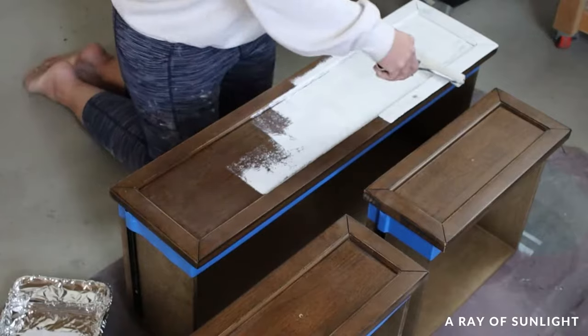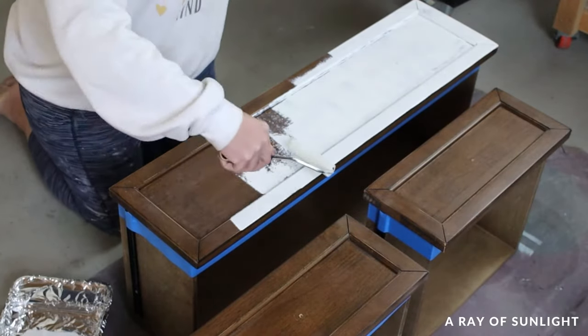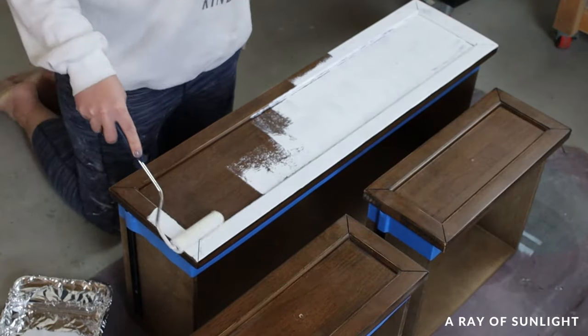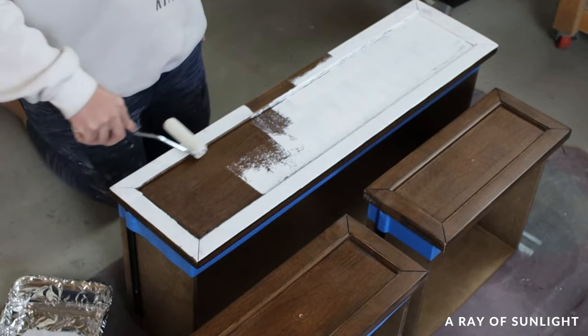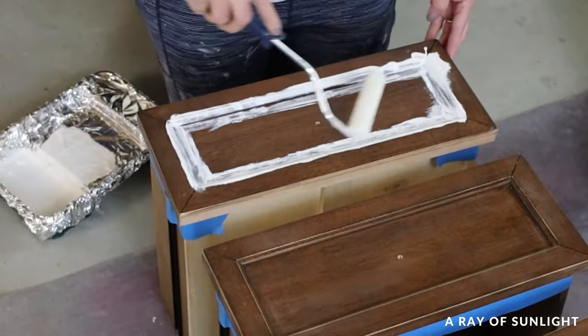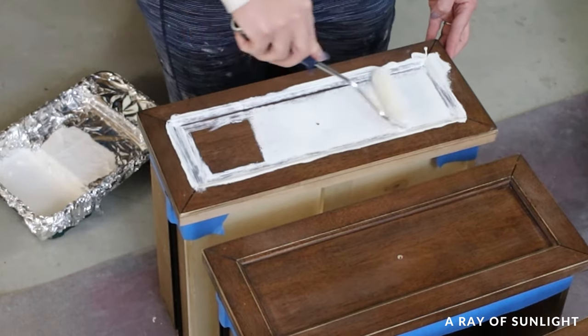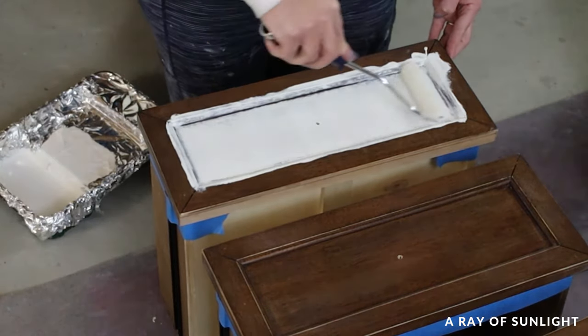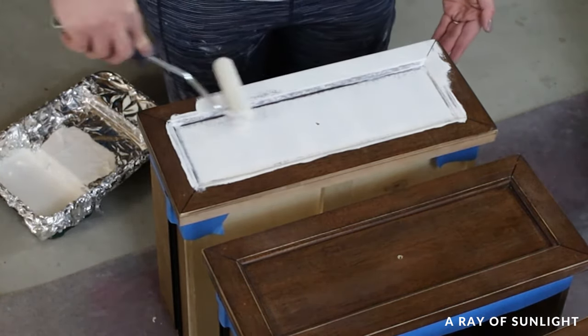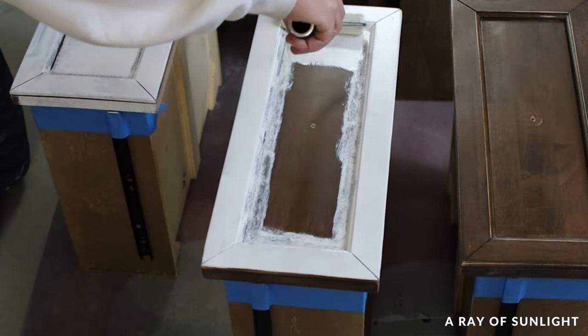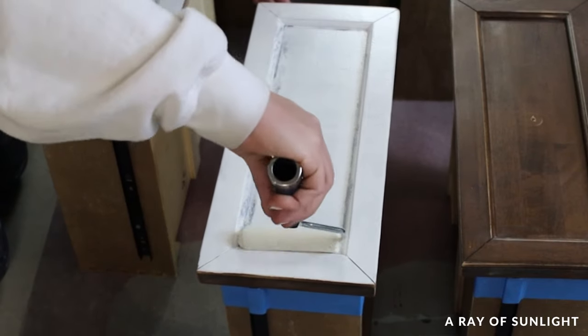While we waited on the stripper, we primed the drawers and the door with bin shellac based primer to help the paint stick, but mostly to prevent stains from coming through the paint. My sister wanted to paint this piece white and if we didn't prime it, I was sure we would have stains ruining our white paint job. We brushed and rolled two coats of primer on to make sure we had full coverage everywhere.